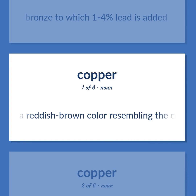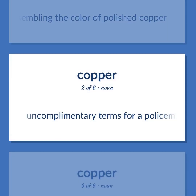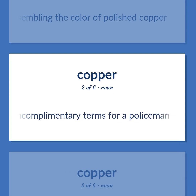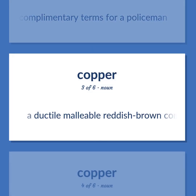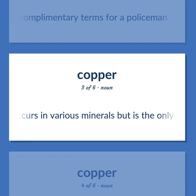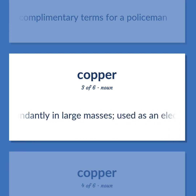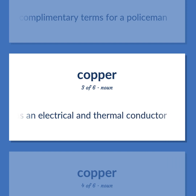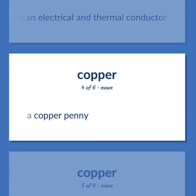A reddish-brown color resembling the color of polished copper. Uncomplementary terms for a policeman. A ductile-malleable reddish-brown corrosion-resistant diamagnetic metallic element. Occurs in various minerals but is the only metal that occurs abundantly in large masses. Used as an electrical and thermal conductor. A copper penny.